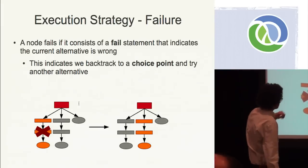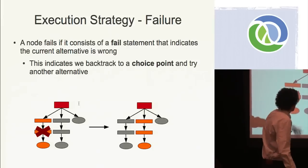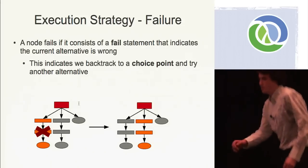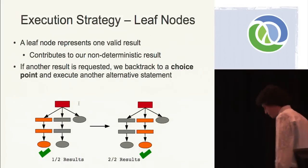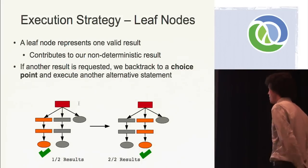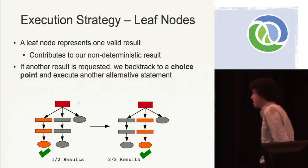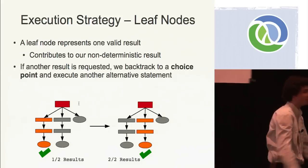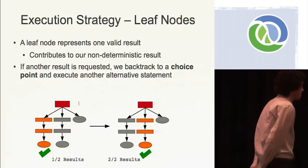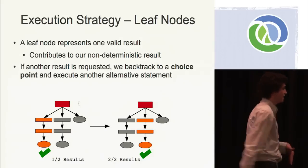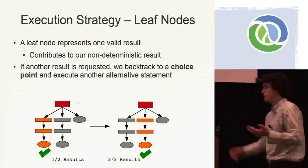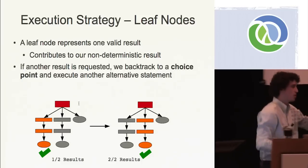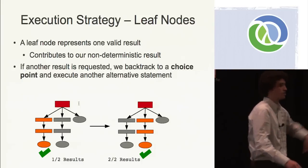When we come across a fail point, that indicates we backtrack to a choice point and try another alternative — we go back and find another alternative. If we get to the end of a branch without a failure, that represents one valid result — a leaf node — and that contributes one result to our non-deterministic result, which we represent as a list. If another result is requested, we backtrack to a choice point and execute another alternative. We do this until we've satisfied how many results we want. We said solve for two values of x — once we have one value and then two values, we don't go down the third branch.